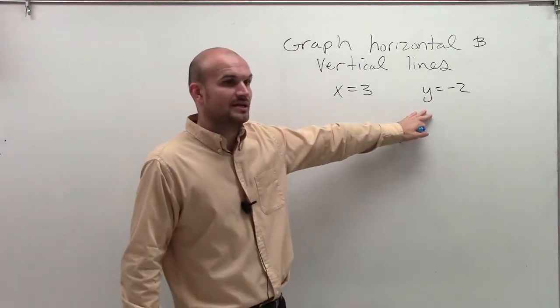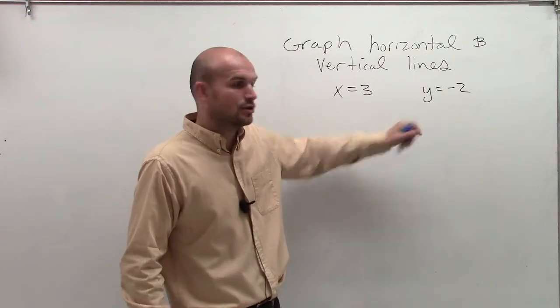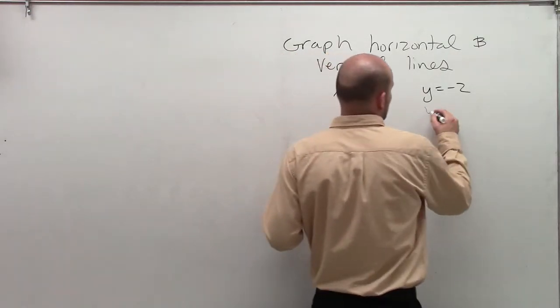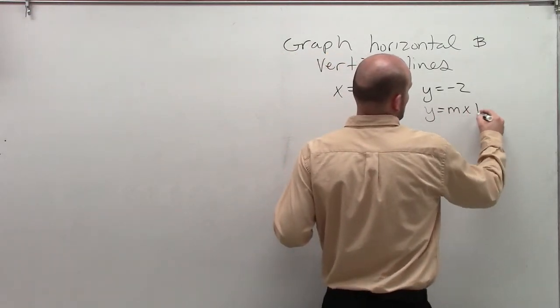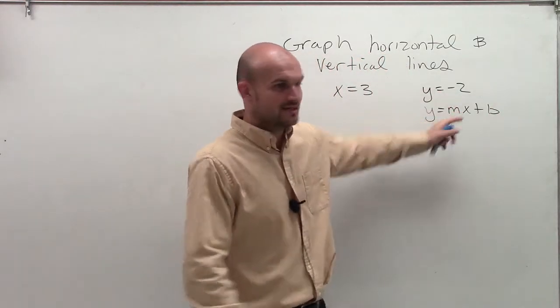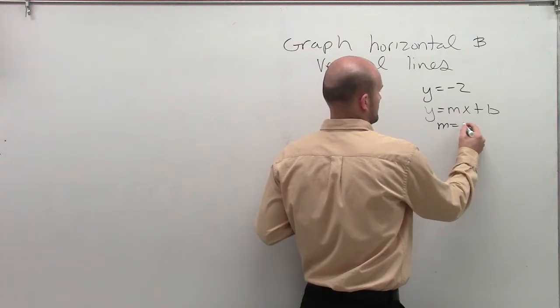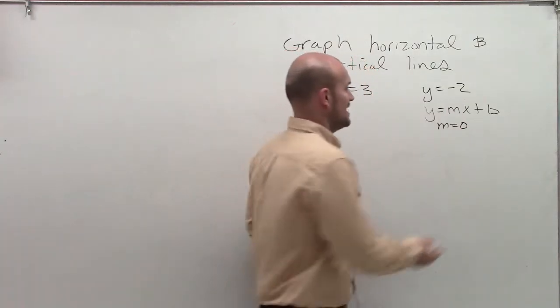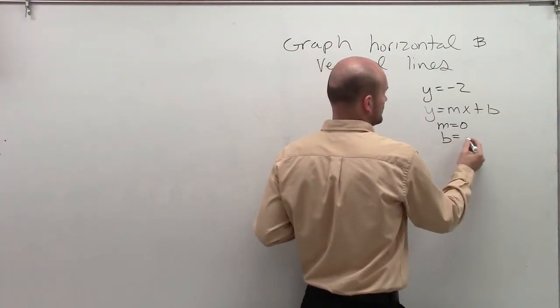This can actually be put in slope-intercept form. If you look at it, I write y equals mx plus b. You notice there's no x, right? So then m has to equal what? Zero. And there's no b, so b has to equal zero.